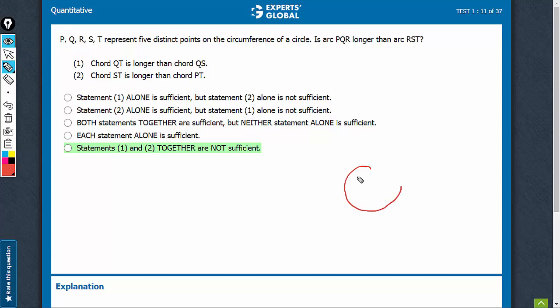We have a circle with five points P, Q, R, S, T on the circumference. Let's not draw these on the circle yet because we don't know the order. The question is asking: is arc PQR longer than arc RST?